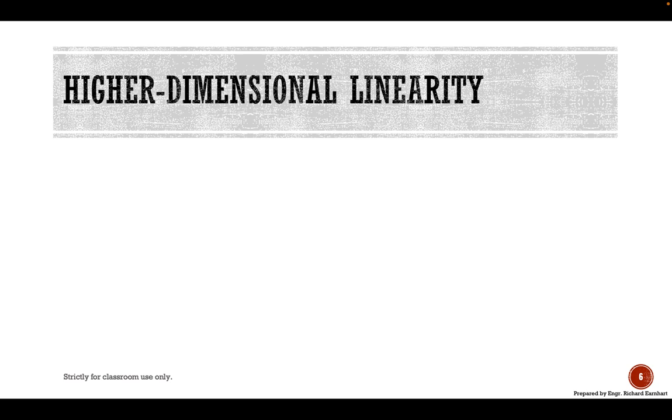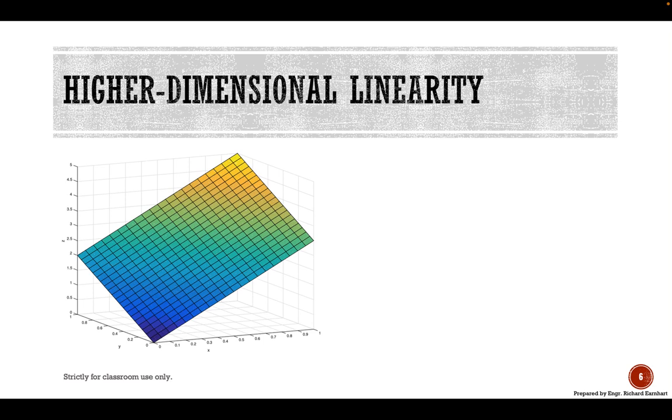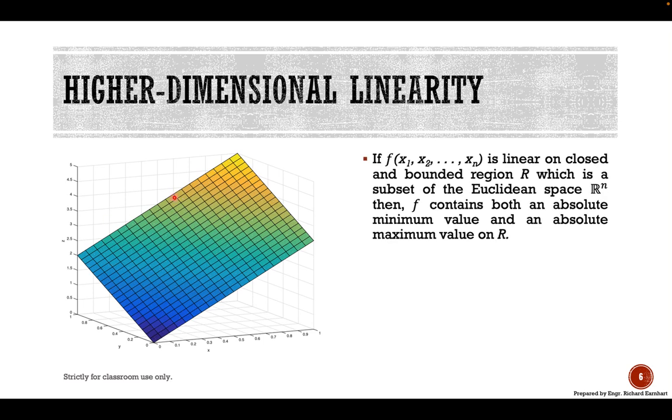Now in the case of higher dimensional linearity, we're dealing with plane surfaces. If f is a function in terms of several variables, n in this case n variables, linear on closed and bounded region R, which is a subset of the Euclidean space R^n, then the function f contains both an absolute minimum value and an absolute maximum value on the region R.